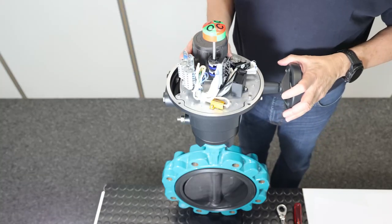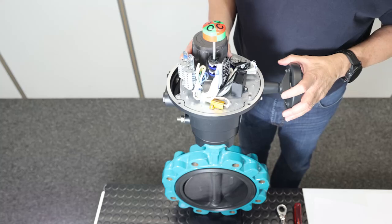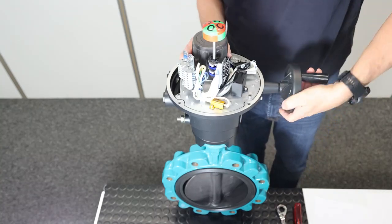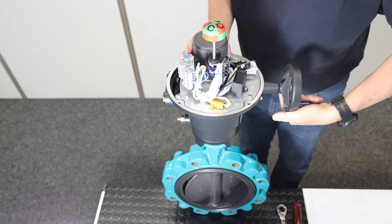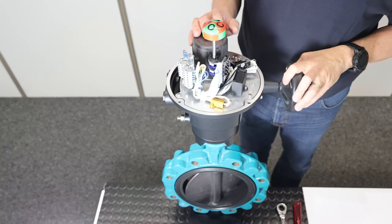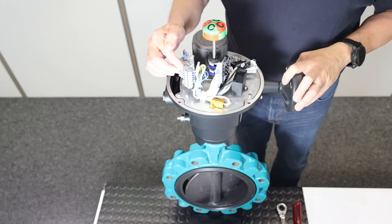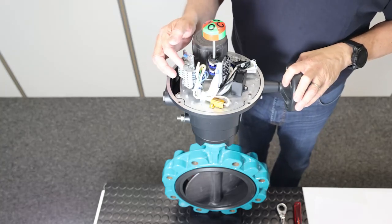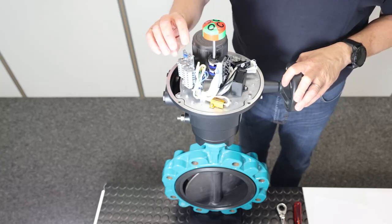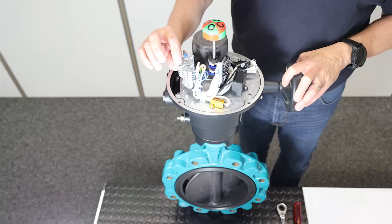We must now check if the actuator operates in the closing direction. To check this, we open the disc using the hand wheel in a semi-open position. Then the power supply must be connected to terminal 1 and 2, and the valve should close. If the valve opens, inverse the cables on terminal 1 and 2.